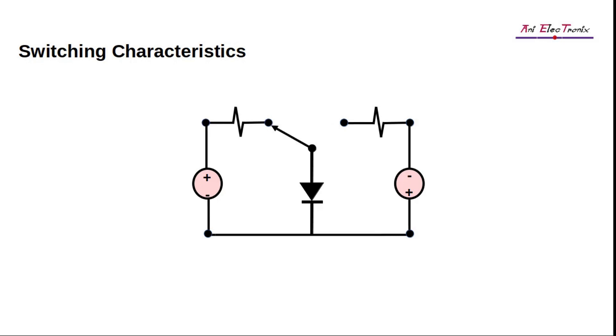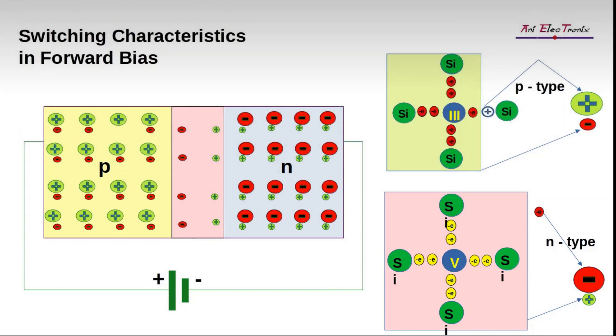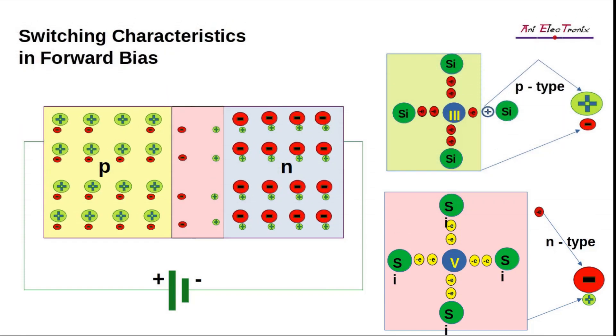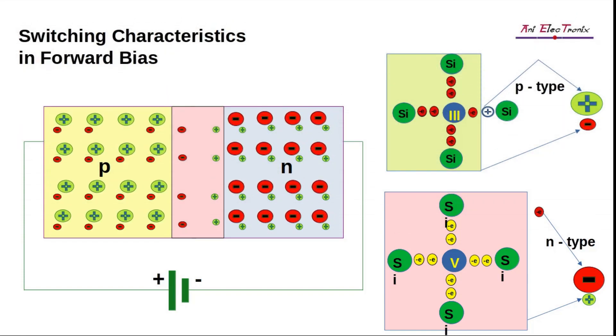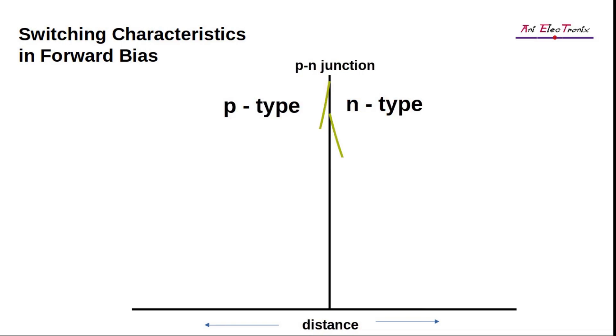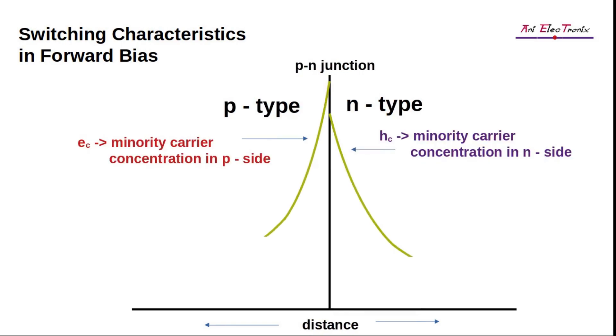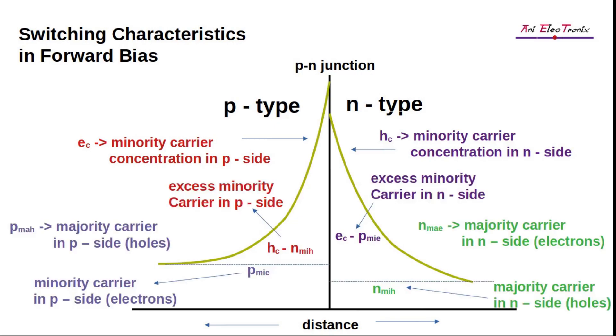Now let us understand the characteristics of switching PN junction diode. The forward bias causes the depletion region to shrink, and the majority carriers can move from one side to the other and become minorities on the other side. As the distance from the junction increases, the concentration of the minority carriers decreases exponentially. Look at the graph and the associated convention very carefully.